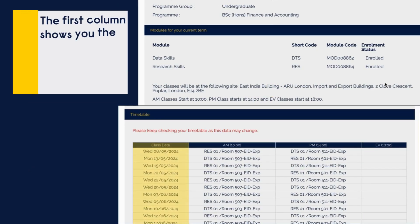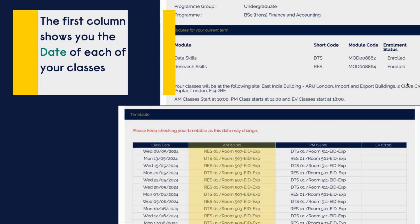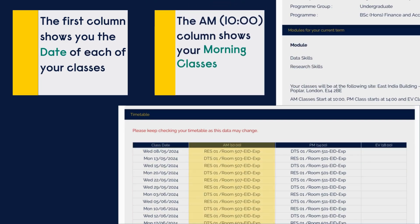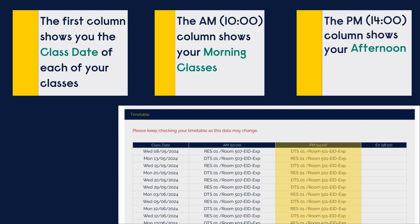On the first column you can see the date of your classes. On the second column you can see information about your morning classes. On the final column you can find information about your afternoon classes.